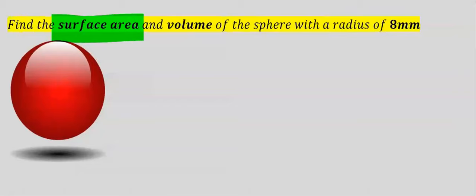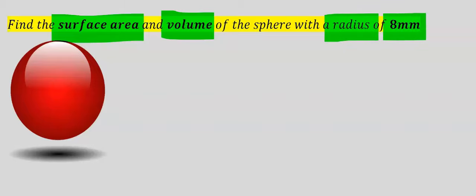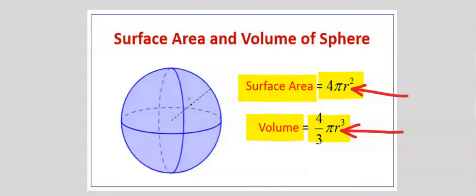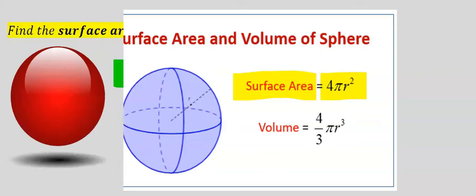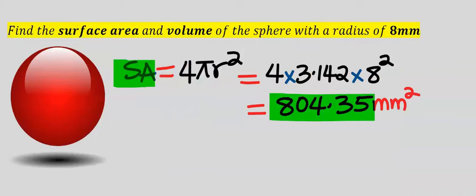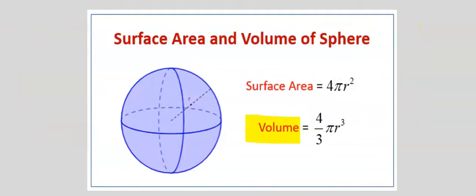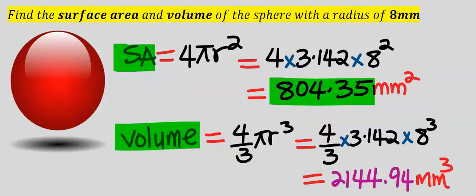Let's find the surface area and the volume of the sphere with radius 8 millimeters. Since we have the radius, for the surface area we use 4 multiplied by pi multiplied by r squared — the surface area is 804.35 millimeters squared. Next, to calculate the volume we use 4 over 3 multiplied by pi multiplied by r cubed — the volume of the sphere is 2144.94 millimeters cubed.